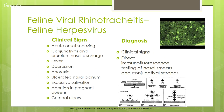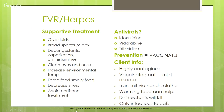Diagnosis is through clinical signs; nasal smears or conjunctival scrapings sent for direct immunofluorescence testing can detect the virus. Treatment is supportive — antivirals like idoxuridine, vidarabine, and trifluridine are expensive and take time to work. We give fluids, broad-spectrum antibiotics (because the viral illness opens the body to secondary bacterial infection), and decongestants to open nasal passageways so the cat can smell and breathe.